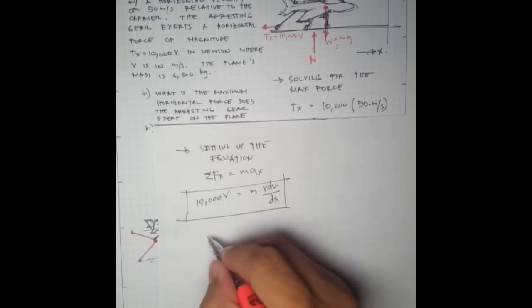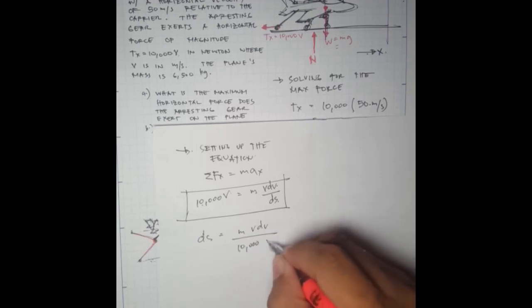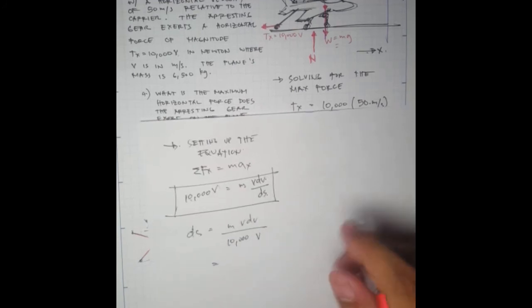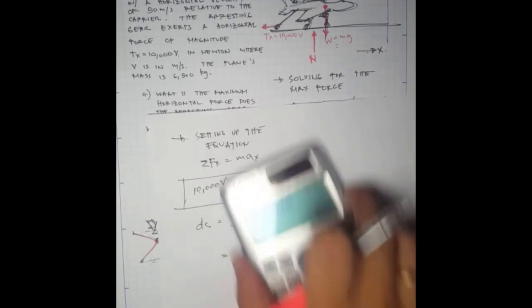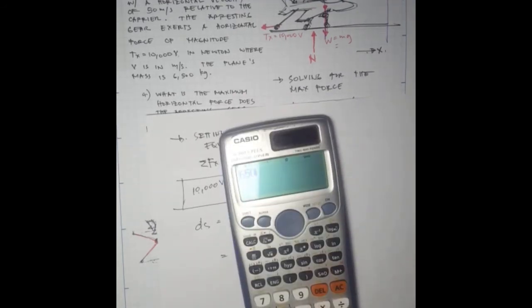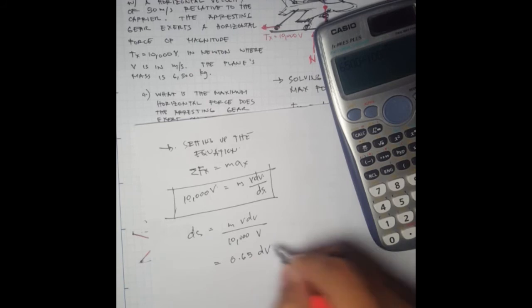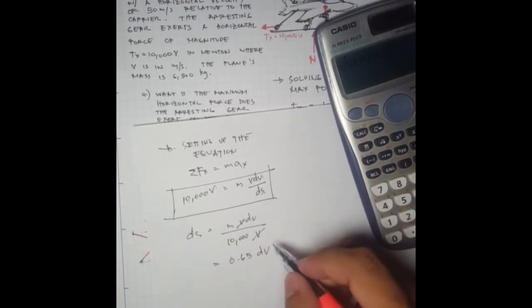So ds equals m times v dv over 10,000v. What's m? It's 6,500 divided by 10,000, which is 0.65 dv. The v cancels out, so we have ds equals 0.65 dv.